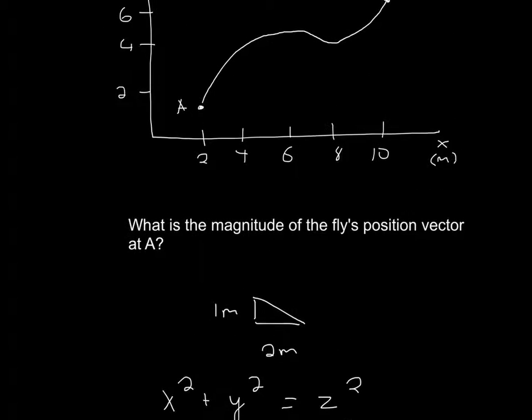Alright, so we have it. We said that in the last part, we said x component is 2, y component is 1, so I drew that little triangle.